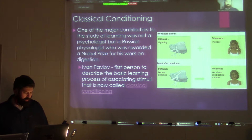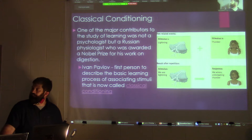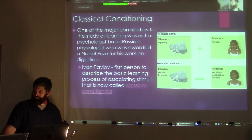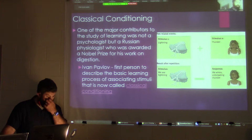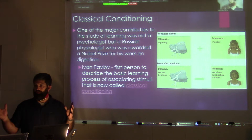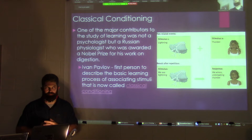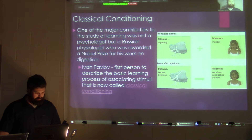Pavlov won the Nobel Prize in 1904. He drilled holes in dogs' mouths and collected saliva from those dogs in response to a little experiment he was doing to look at digestion. So he wasn't a psychologist — he was a physiologist. And he found one of the craziest discoveries: this is how people — and pretty much all species — gain or acquire a new behavior.